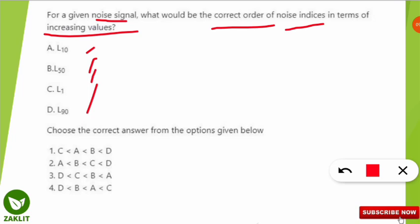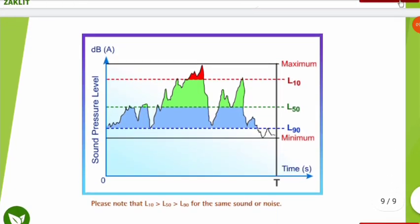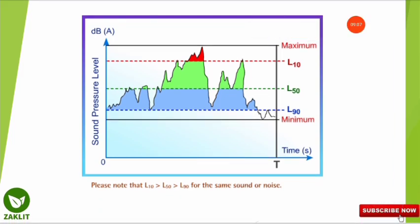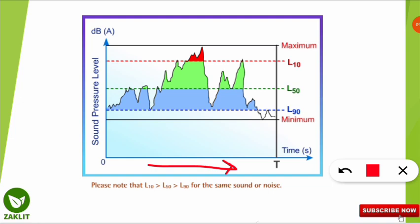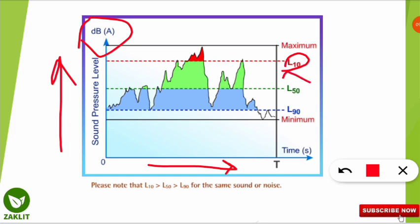Looking at the graph on screen — the x-axis shows time and the y-axis shows sound pressure level in decibels — L10 has the maximum value, followed by L50, then L90 with the minimum value. Note that L1 is above L10 and not shown on this graph. The key trick: as the number after 'L' increases (L1 → L10 → L50 → L90), the noise level decreases.